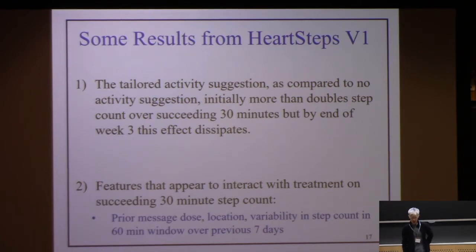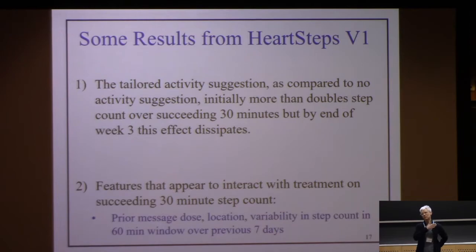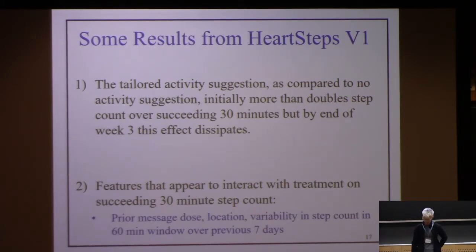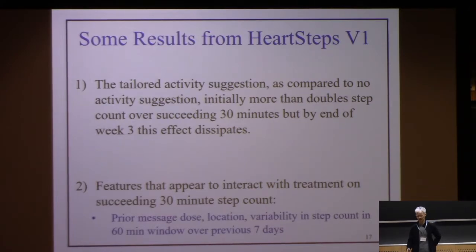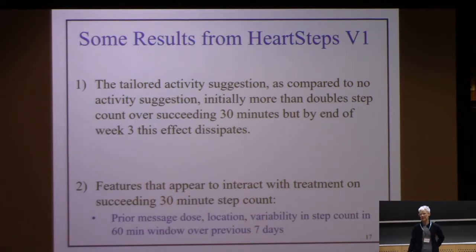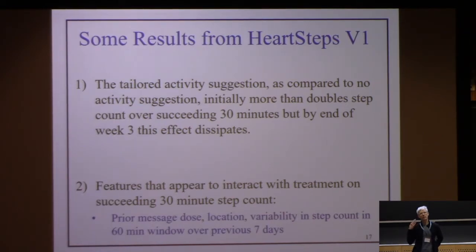From analyses of the first study, the features related to treatment responsivity — shown in blue — were: how many messages you'd gotten recently (more recent messages led to less responsiveness); how variable your step count had been in that hour over the last seven days (more variable meant more responsive); and location — if you were at home or work, you were more responsive. These blue features are the ones we think will probably be in the policy. There were other features that might predict reward, but these are the key ones.